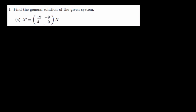Question A says find the general solution of the linear system that has been written in matrix form. You're given x prime equals the matrix [12, -9; 4, 0] times x. This is the coefficient matrix, while x is what we intend to find. Comparing with x prime equals Ax, the coefficient matrix A is identified as A = [12, -9; 4, 0].